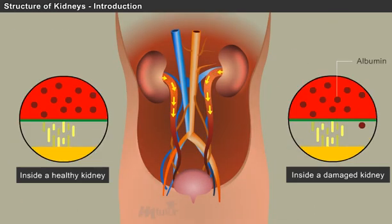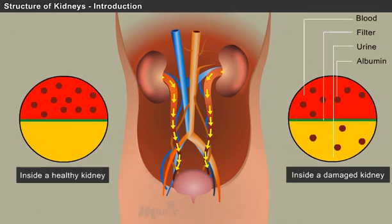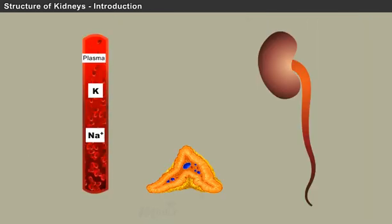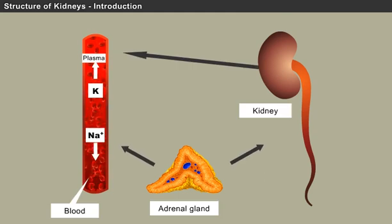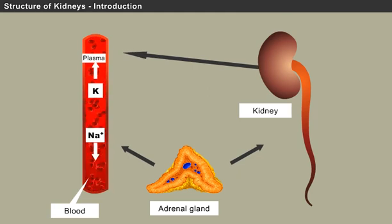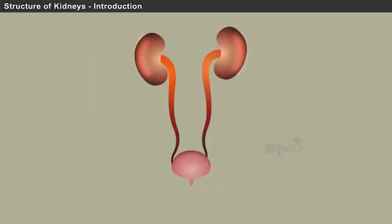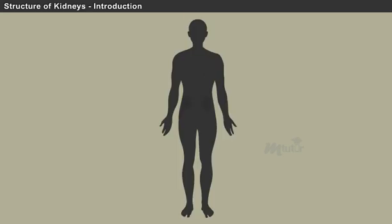These bean-shaped organs play a major role in filtering your blood and removing wastes. Moreover, they are the very own laboratories in your body that check your blood continuously to ensure that the concentration of each electrolyte falls within the precise range that your body requires to work. Let us dig deep and explore more about these organs — the urinary system.